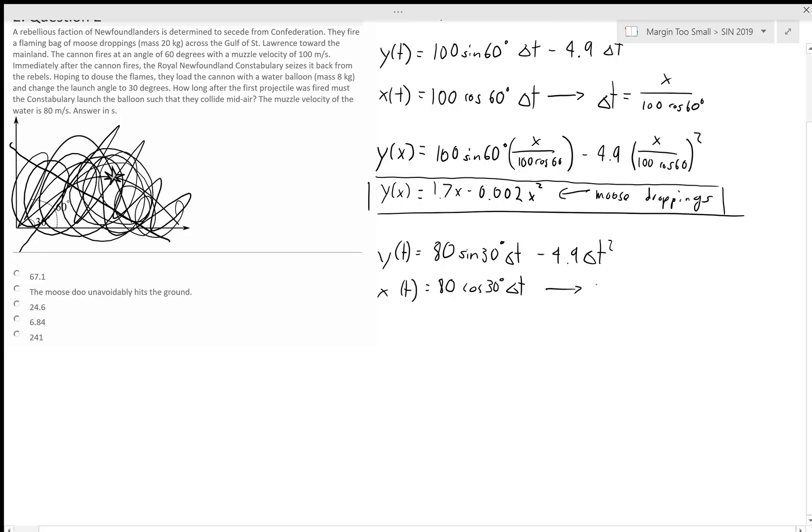We can make the same substitution again. Delta t equals x over 80 cosine 30. We can write y of x equals 80 sine 30 times x over 80 cosine 30, minus 4.9 times x divided by 80 cosine 30 squared, which equals 0.58x minus 0.001x squared.